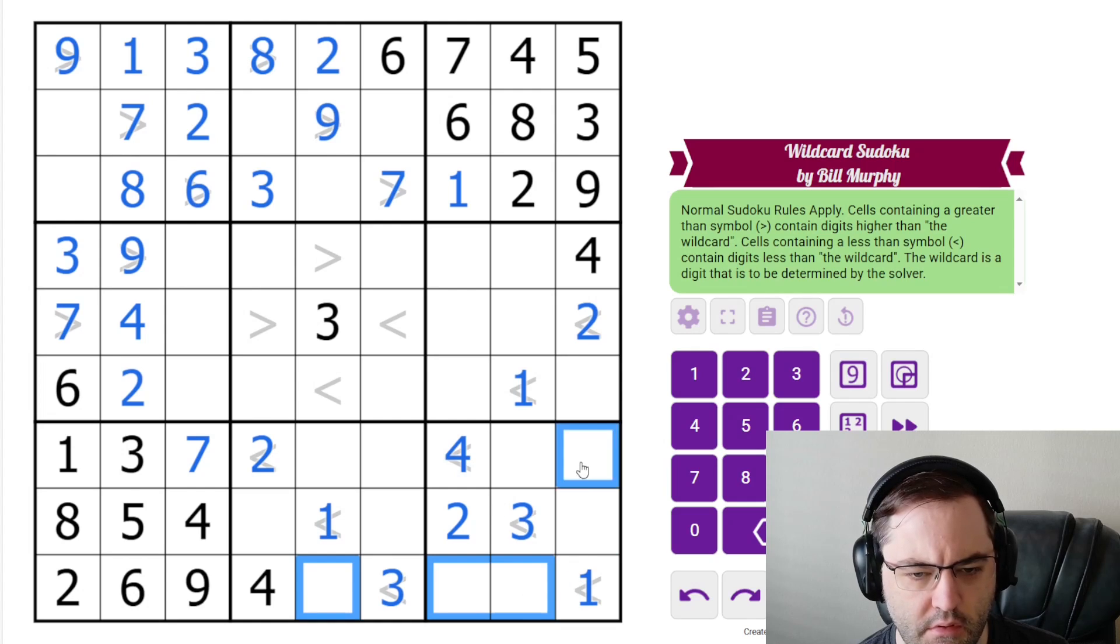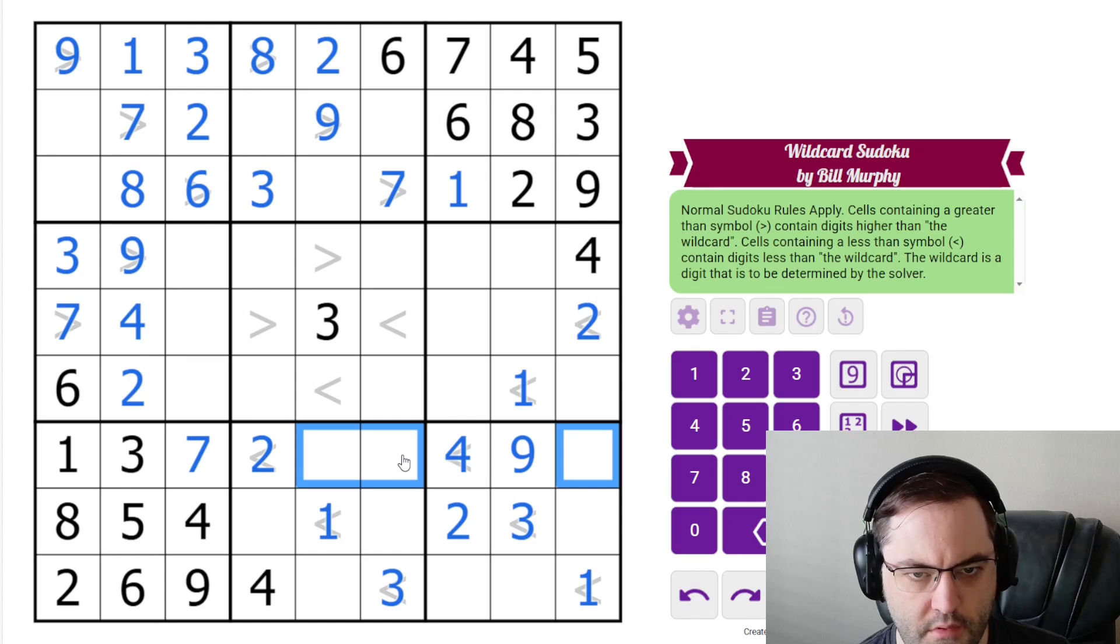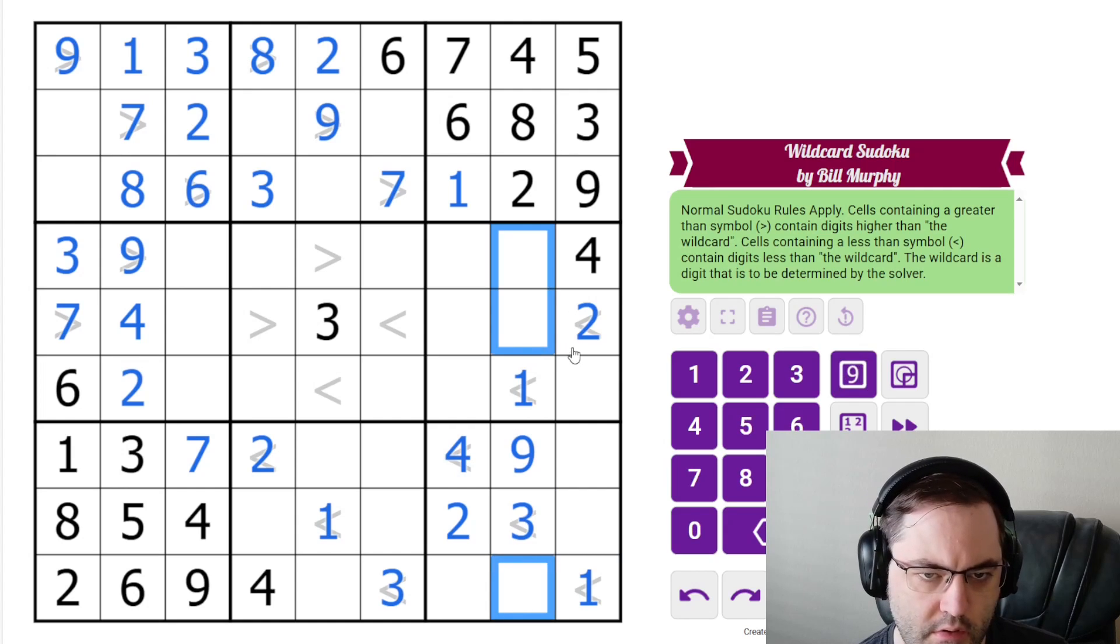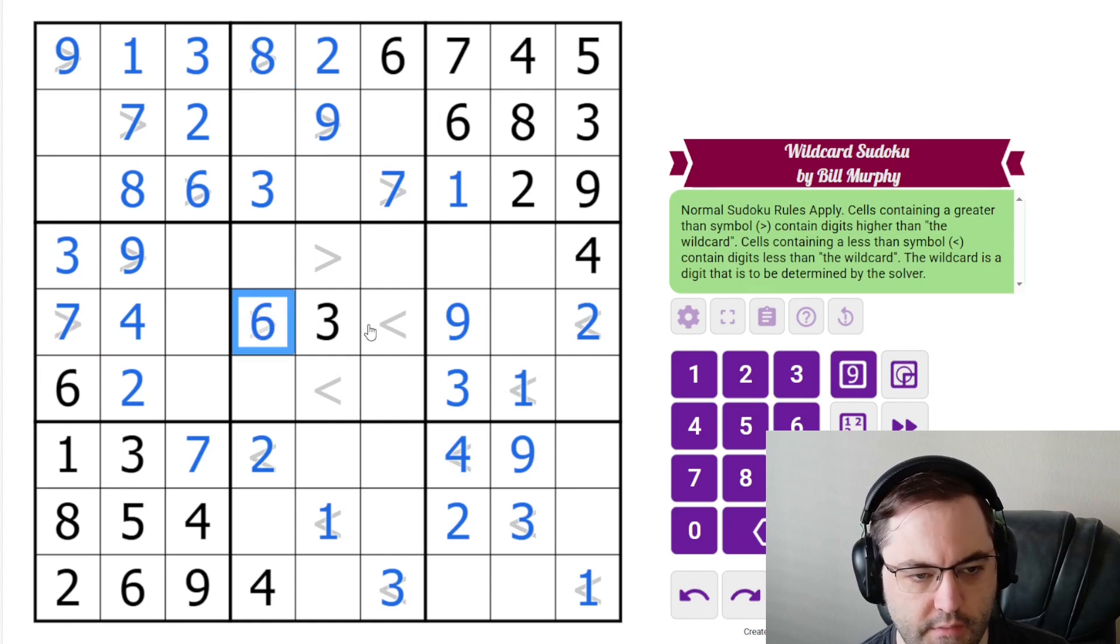And these are five, seven, eight. So where does nine go? Nine goes here. Five, six, and eight. And these are five, six, seven. Three in this column has to go here. We've got threes in those cells. The nine has to go here. All right, can we do anything with this yet? Yeah, seven, nine, eight. That's a six. And this is a one.